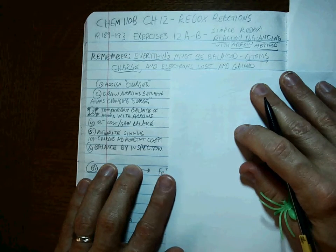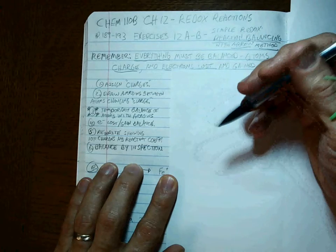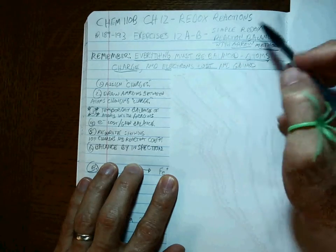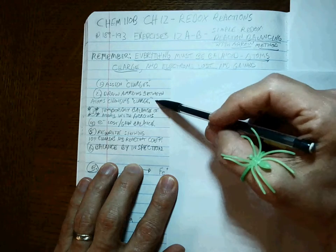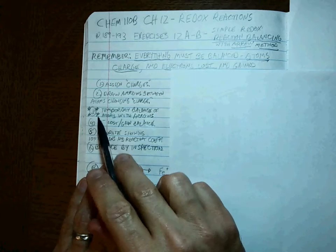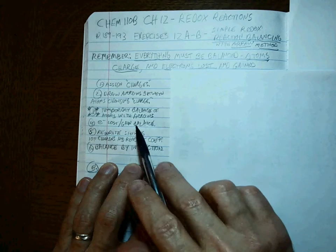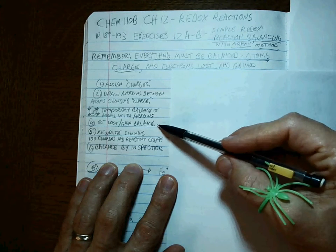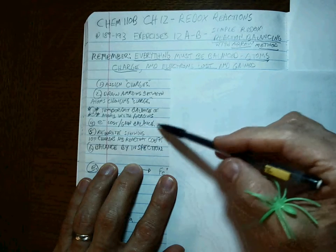Your job is to understand each one of these steps and be able to do them on your own. First, assign the charges — it's pretty obvious what the charges are in these simple problems. Then we draw arrows between the atoms that are changing that charge. Then the step that everybody forgets, which is why we put stars around it: we do a temporary balance of the atoms that have arrows attached. And then we find the electrons lost, electrons gained, and balance them.